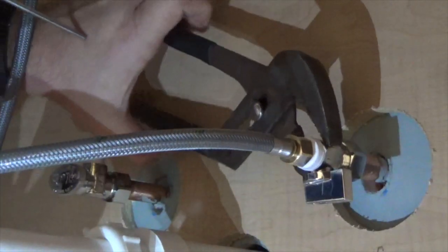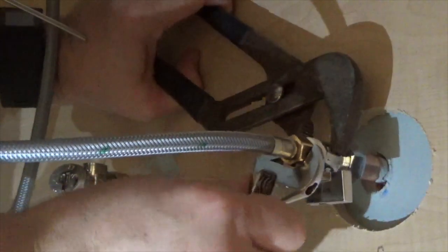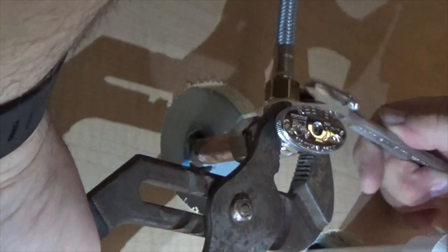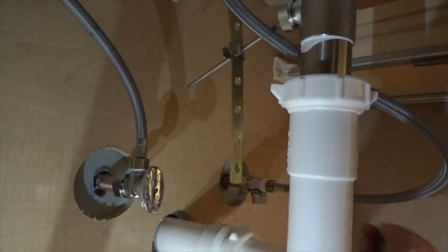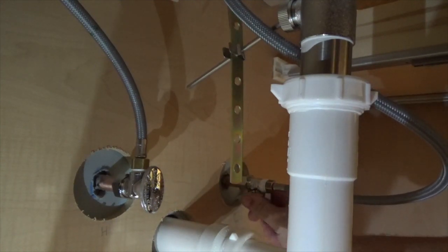Secure the valve using channel locks and tighten the line using a wrench. Make sure you do not over-tighten. You can ruin the threads and the seal. If the drain has been plumbed, the water valves can now be turned on. Make sure you check all connections for leaks.